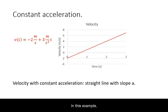In this example, the velocity at time equals 0 is negative 2 meters per second. The slope of the line from then on is 3 meters per second squared, such that the value of velocity becomes more positive with time.